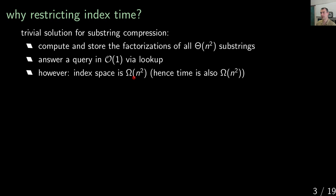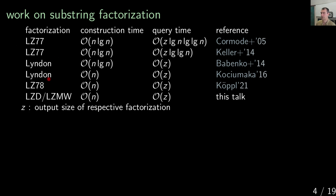People have looked at the substring factorization problem with respect to LZ77, Linden factorization, and LZ78, and you can see that the construction times and query times are already quite compelling. However, it's still not optimal in that we want linear indexing time and linear query time in the number of respective factors. In this talk we look at two derivatives of LZ78 — LZD and LZMW — and show that we can compute both factorizations optimally.